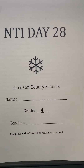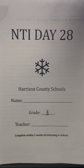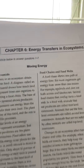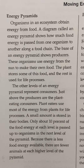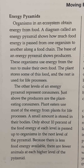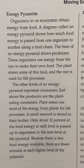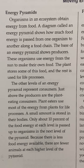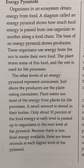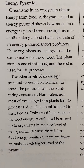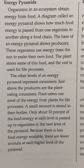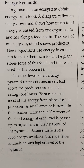NTI Day number 28, fourth grade science: moving energy, energy pyramids. Organisms in an ecosystem obtain energy from food. A diagram called an energy pyramid shows how much food energy is passed from one organism to another along a food chain. The base of the energy pyramid shows producers — these organisms use energy from the sun to make their own food. The plant stores some of this food and the rest is used for life processes.